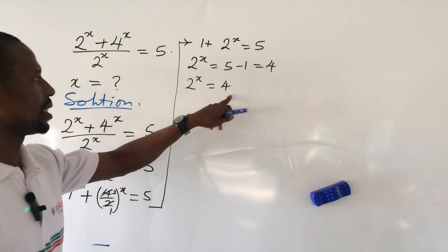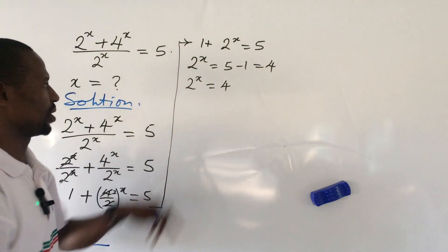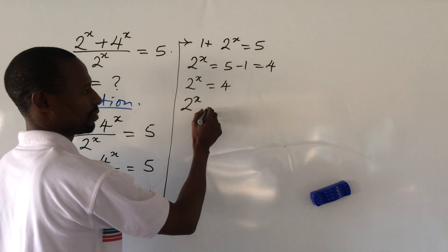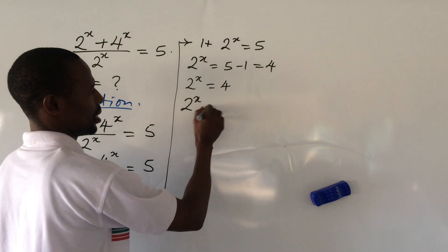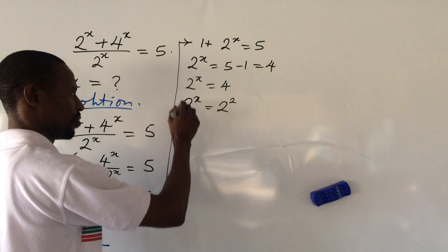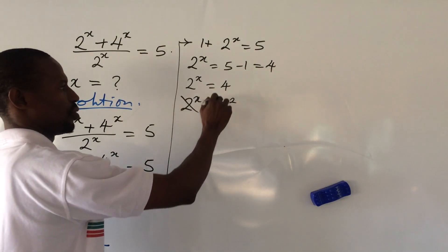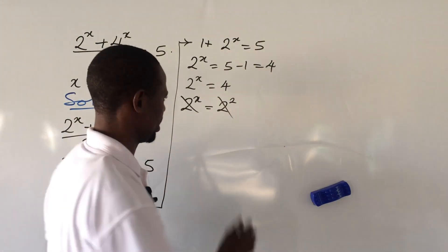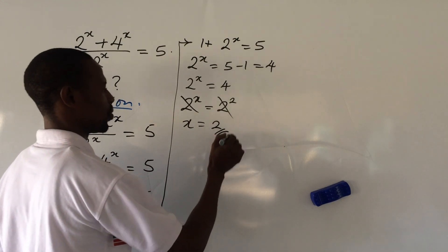We express 4 in base 2: 2^x = 2^2. Since the bases are the same, we equate the exponents, giving us x = 2. That is the first method.